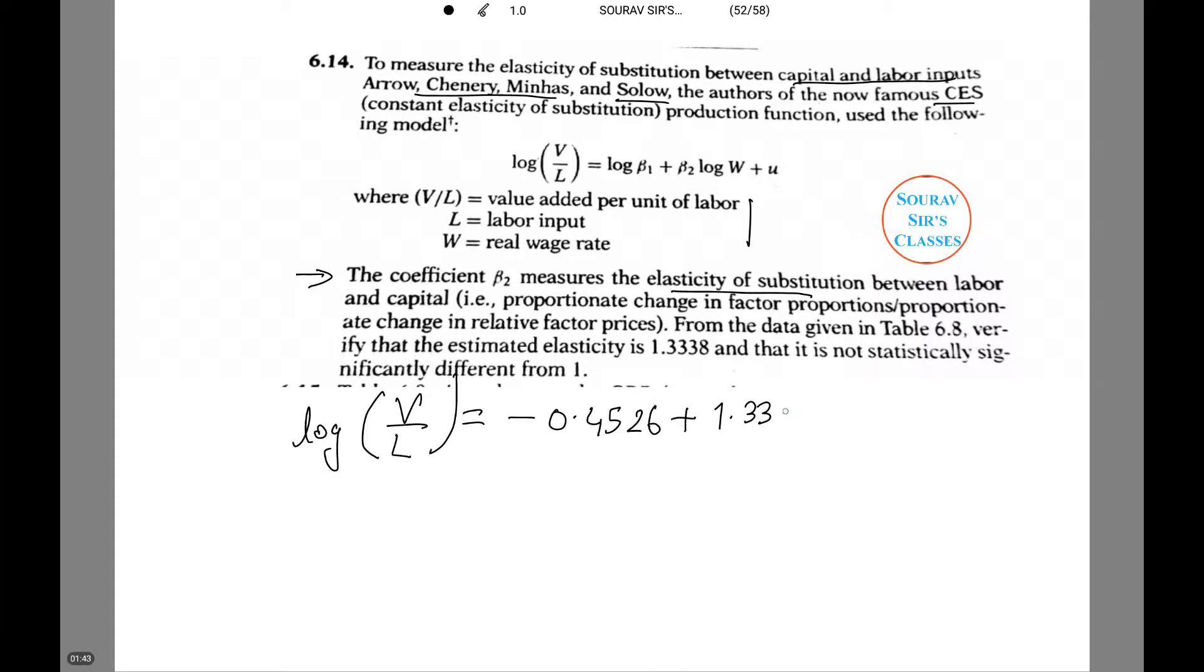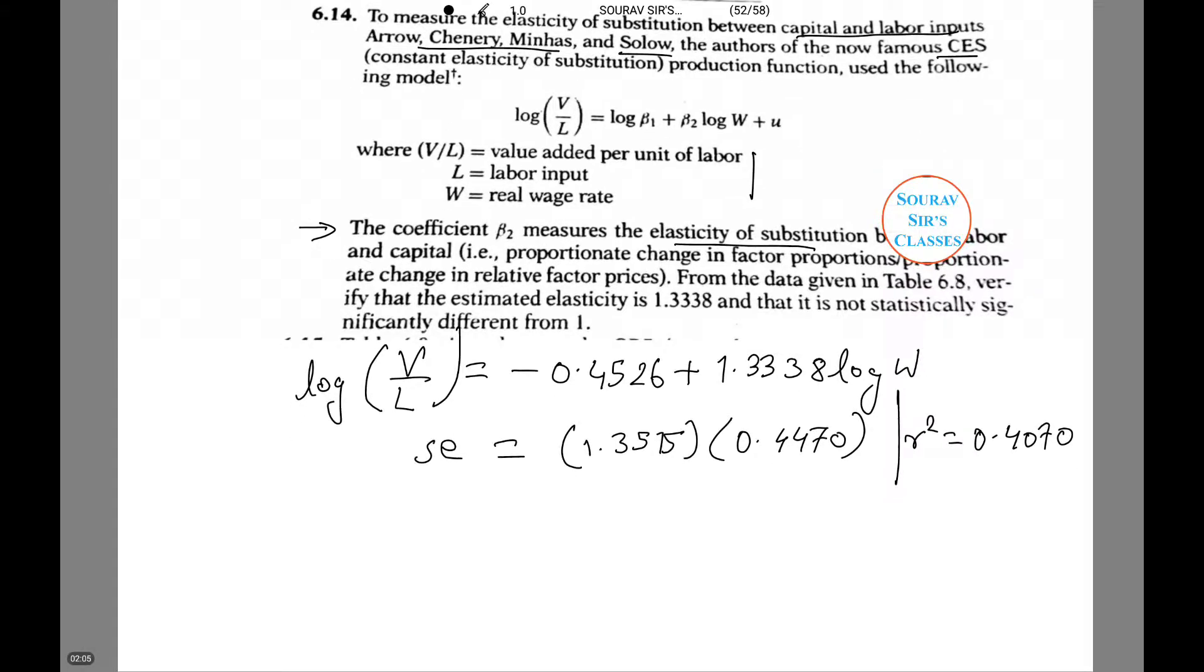Standard error equals 1.3515 and 0.4470, R squared equals 0.4070. To test the null hypothesis we use the t test.